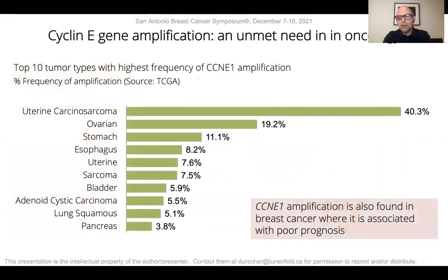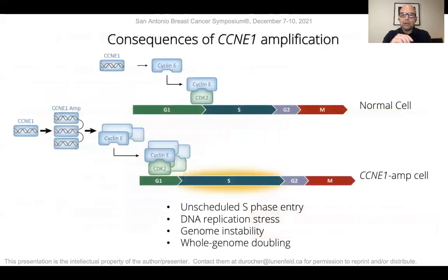One such genetic alteration that we think is very tractable for synthetic lethal-based therapies is the amplification of the cyclin E1 gene. Cyclin E1 gene amplification is found in multiple tumor types, including breast cancer, where it's associated with poor prognosis and chemo resistance. We think it is tractable for synthetic lethal approaches because there are consequences associated with cyclin E1 amplification.